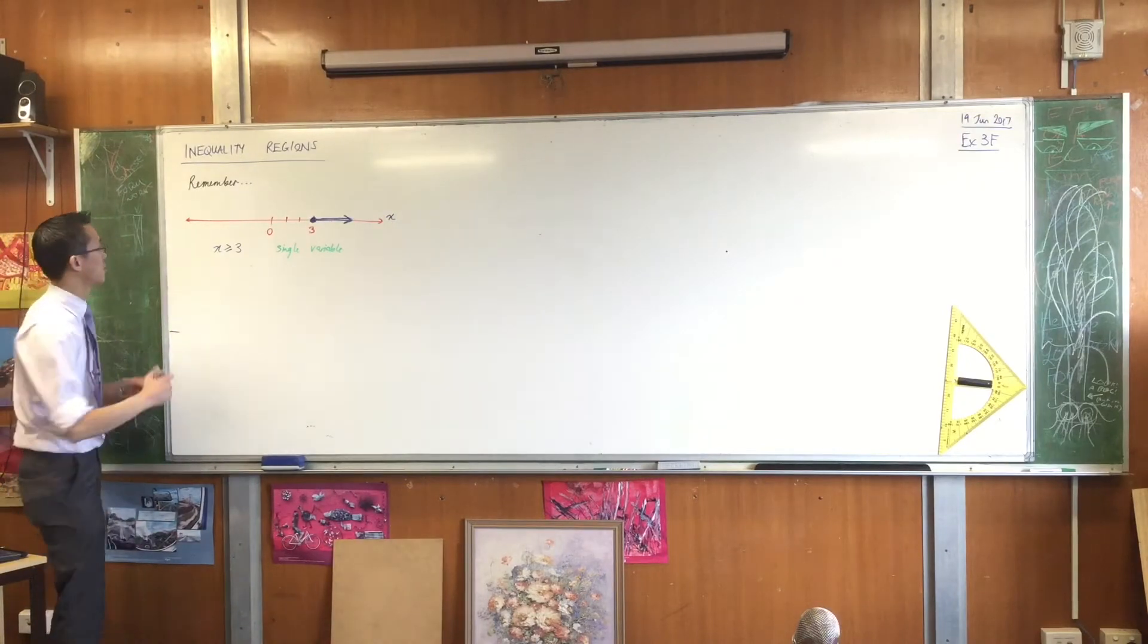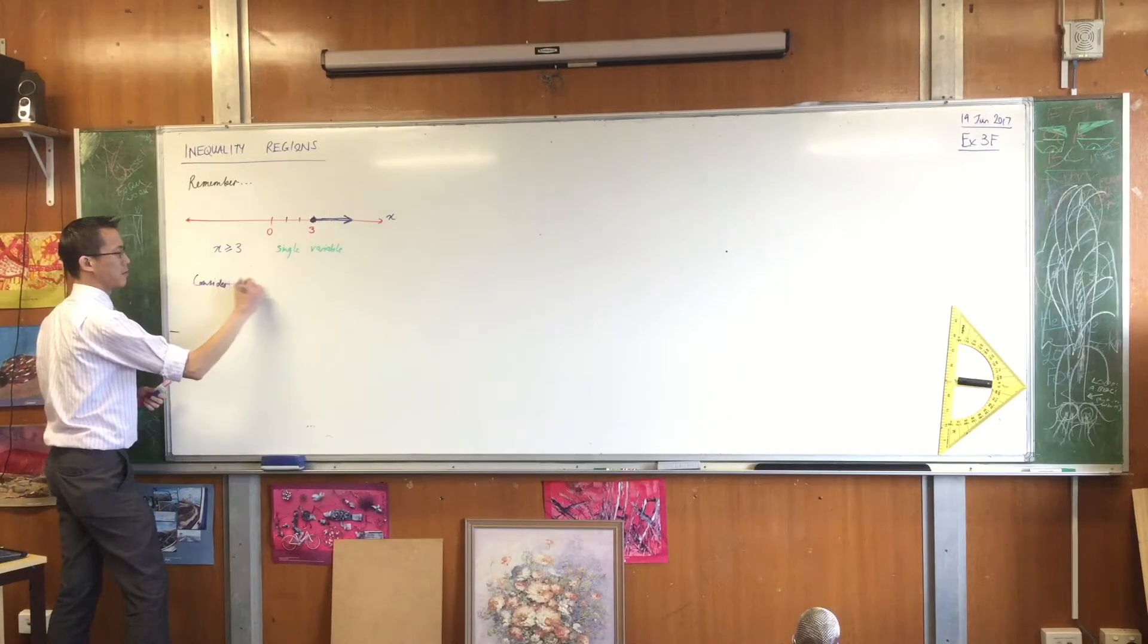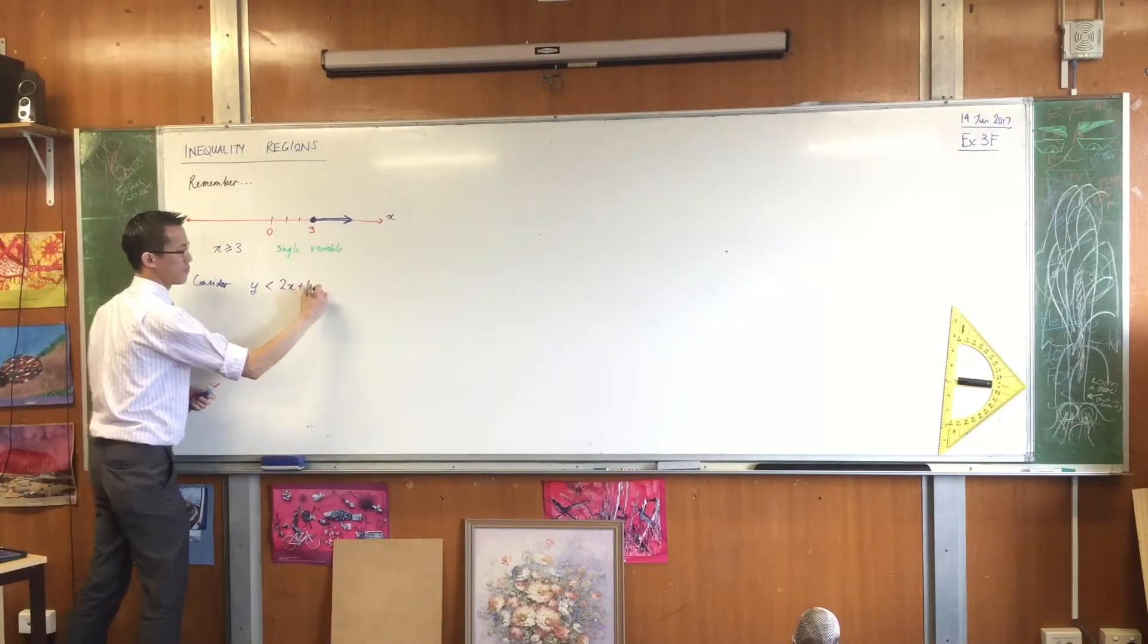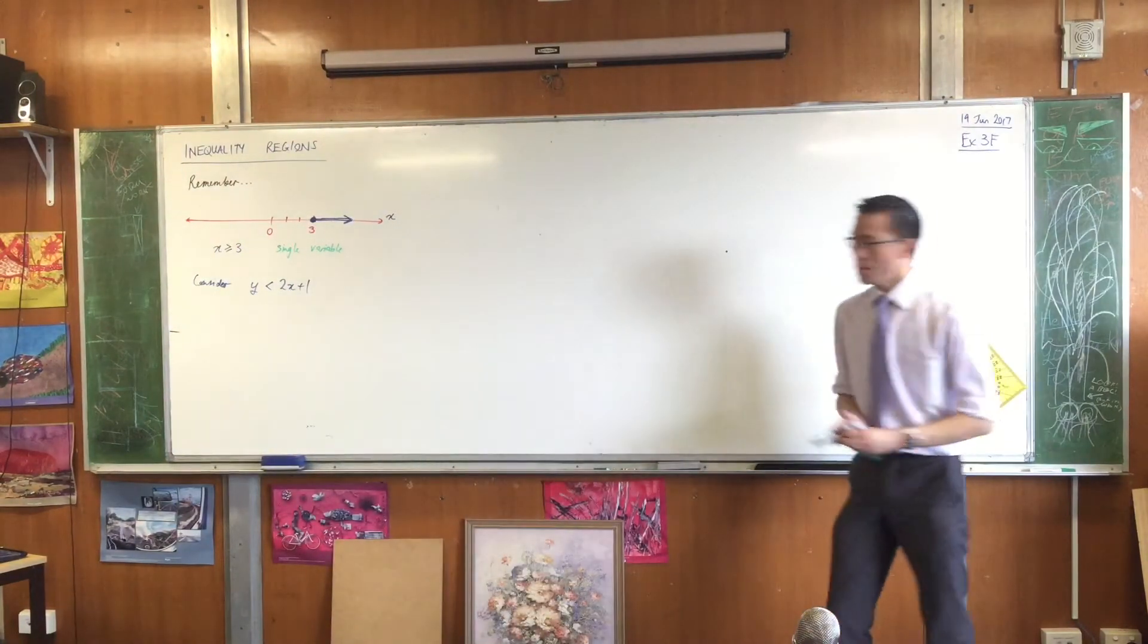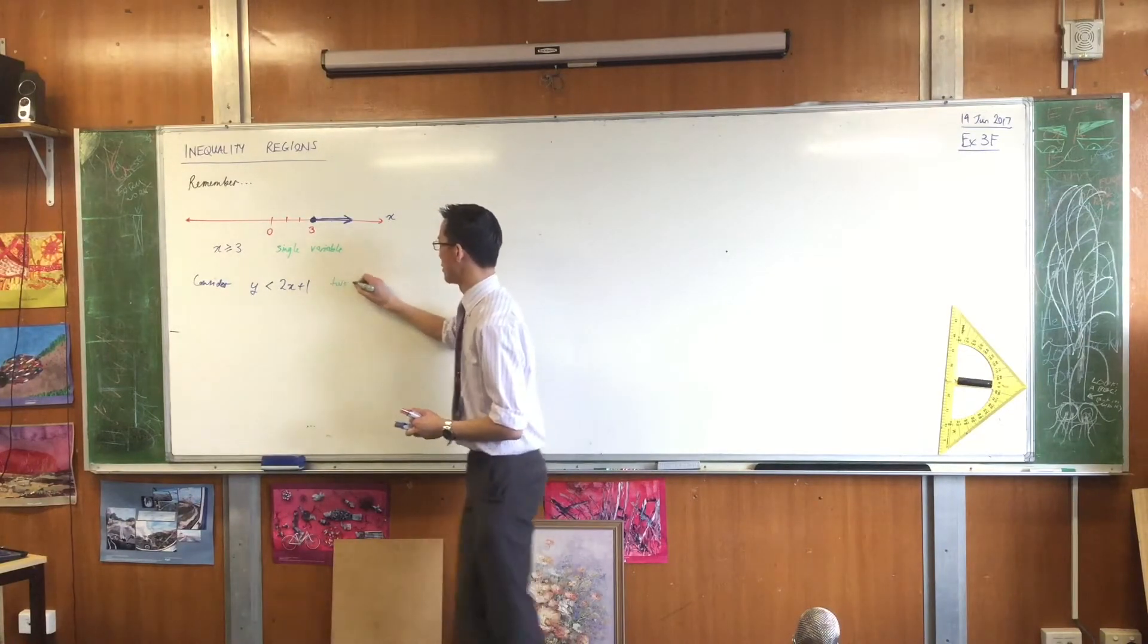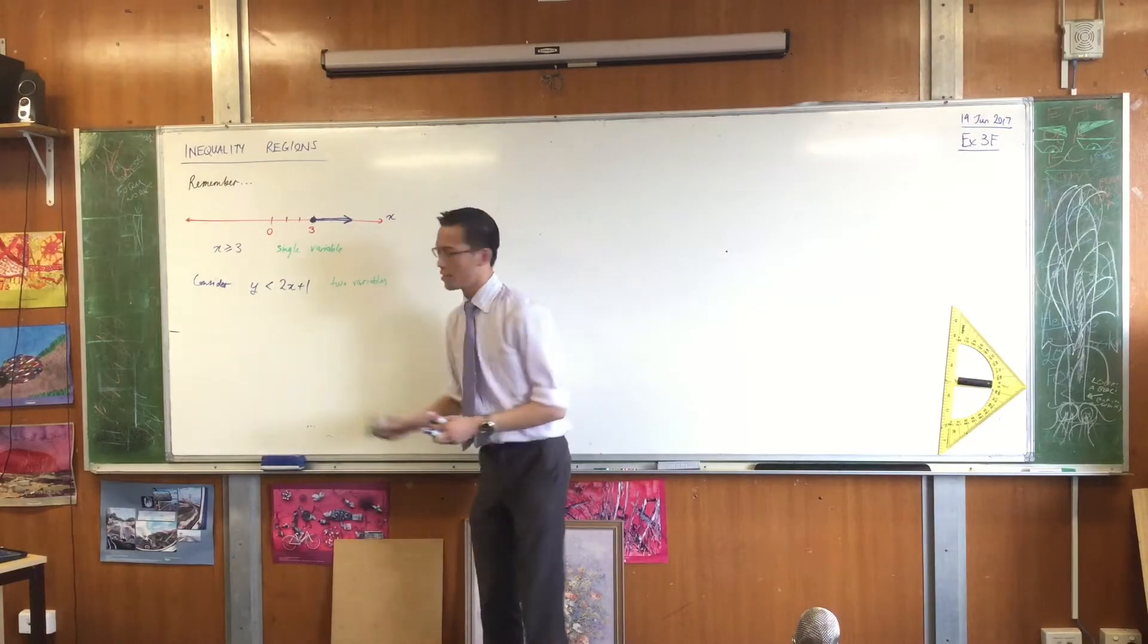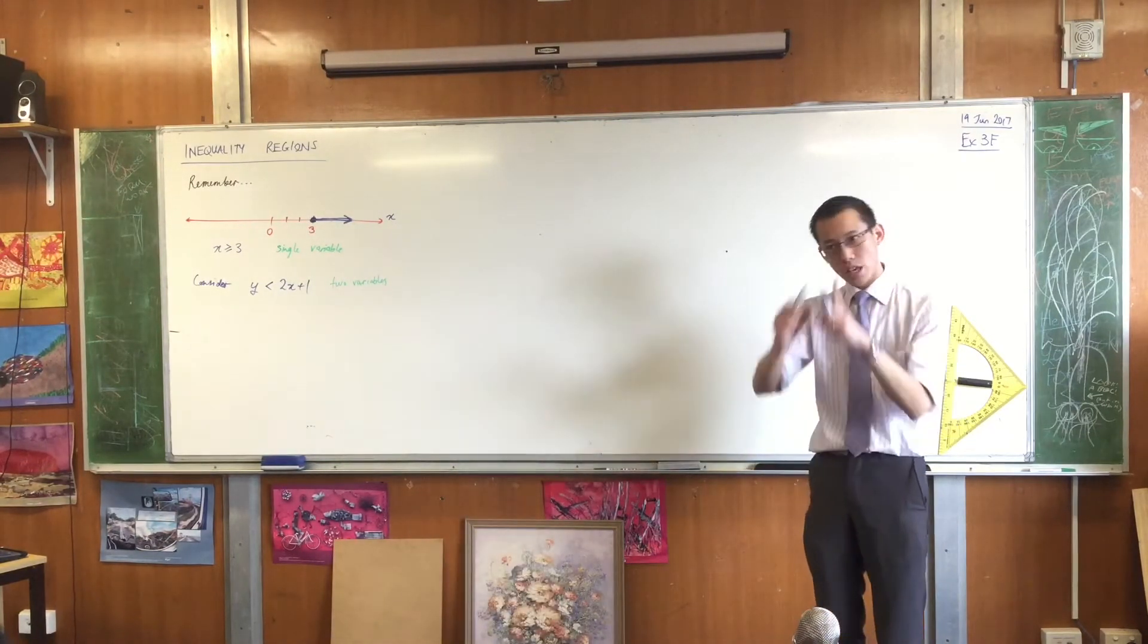So what would happen if we had more than one variable? For example, let's do this one. So what would this be? This is no longer a single variable. This is two variables. I guess we could call it bivariant, but that's usually an adjective that is for statistics.